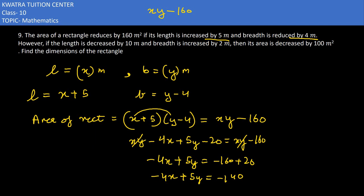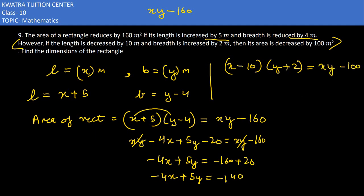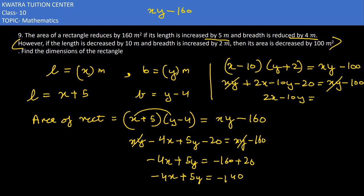Now we derive the second equation. If the length is decreased by 10 meters, it becomes x minus 10. The breadth is increased by 2, so it becomes y plus 2, and the area decreases by 100, giving xy minus 100. Expanding: xy + 2x - 10y - 20 = xy - 100. The xy cancels, giving 2x - 10y - 20 = -100.